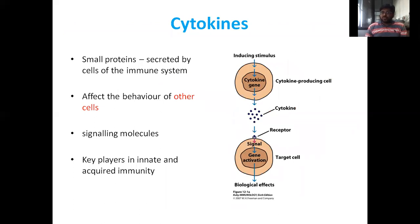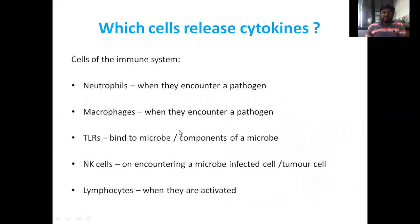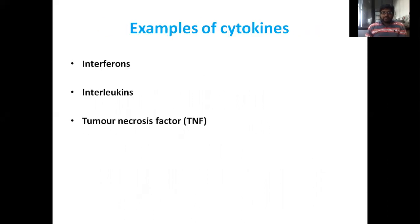What are cytokines? They are small proteins secreted by cells of the immune system that affect the behavior of other cells. The cytokine gene is present in the cell, and by immune response the cell secretes cytokines, which are important for triggering cells as part of a signal. They act via receptors to produce biological effects, and are key players in both innate and acquired immunity — known as signaling molecules. Cytokines are released by neutrophils, macrophages, TLR-stimulated cells, natural killer cells encountering infected or tumor cells, and activated lymphocytes. Examples include interferons, interleukins, and tumor necrosis factor (TNF).